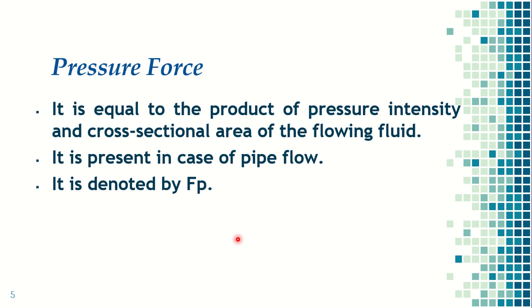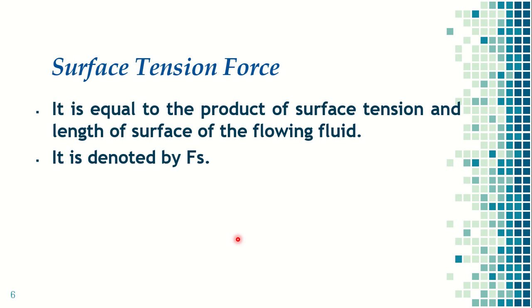Next comes pressure force. Pressure force is the product of pressure intensity and cross-sectional area. We know that pressure P equals force divided by area, so force equals pressure into area. Pressure force is present in pipe flows because in pipe flow, water does not flow under gravity — a pressure is applied. The pressure varies between sections; for example, pressure at section 1 is P1 and at section 2 is P2. It is denoted by the symbol Fp.